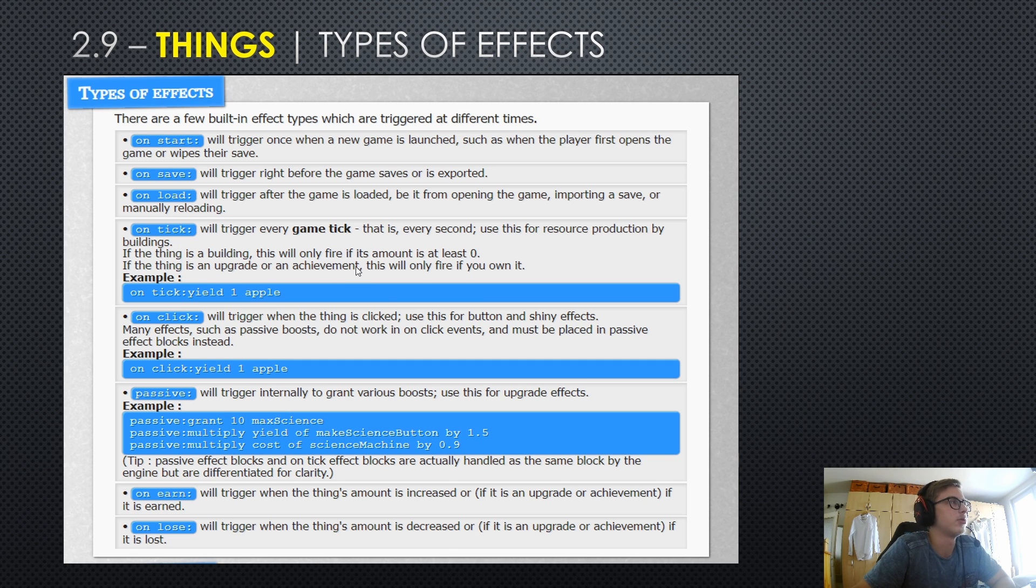If the thing is a building, this will only fire if its amount is at least zero. And if the thing is an upgrade or an achievement, this will only fire if you own it. You can also use the on tick effect on upgrades and achievements as well. Here we have an example, every second, for example, if you append this to a building, it would yield you one apple.